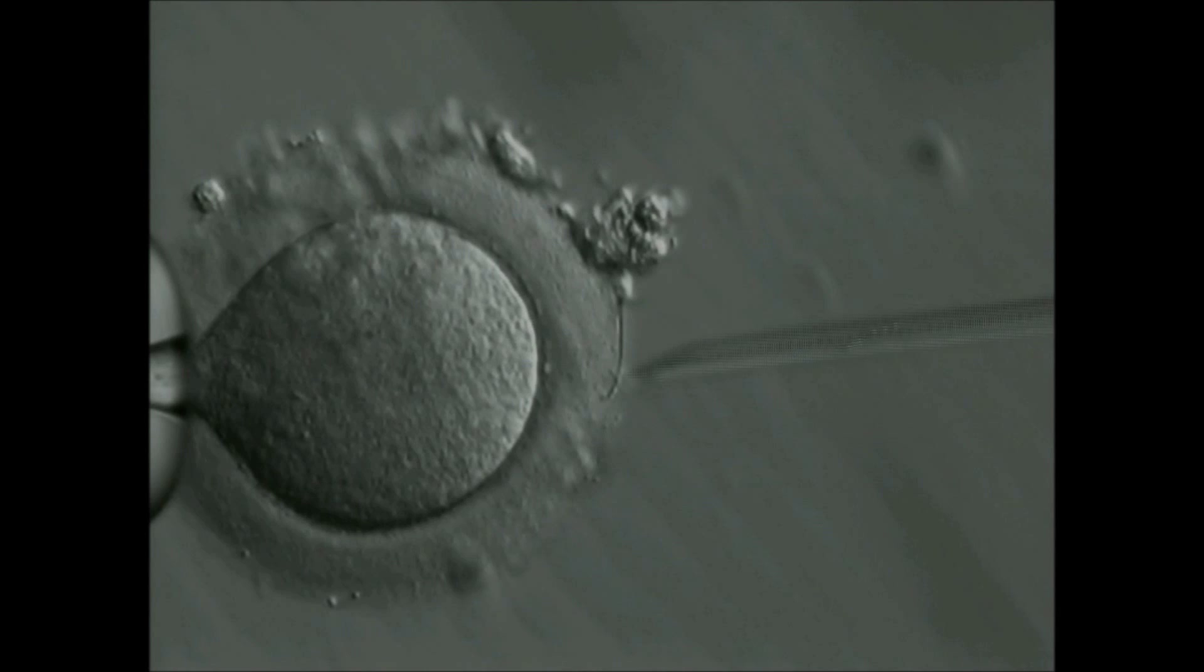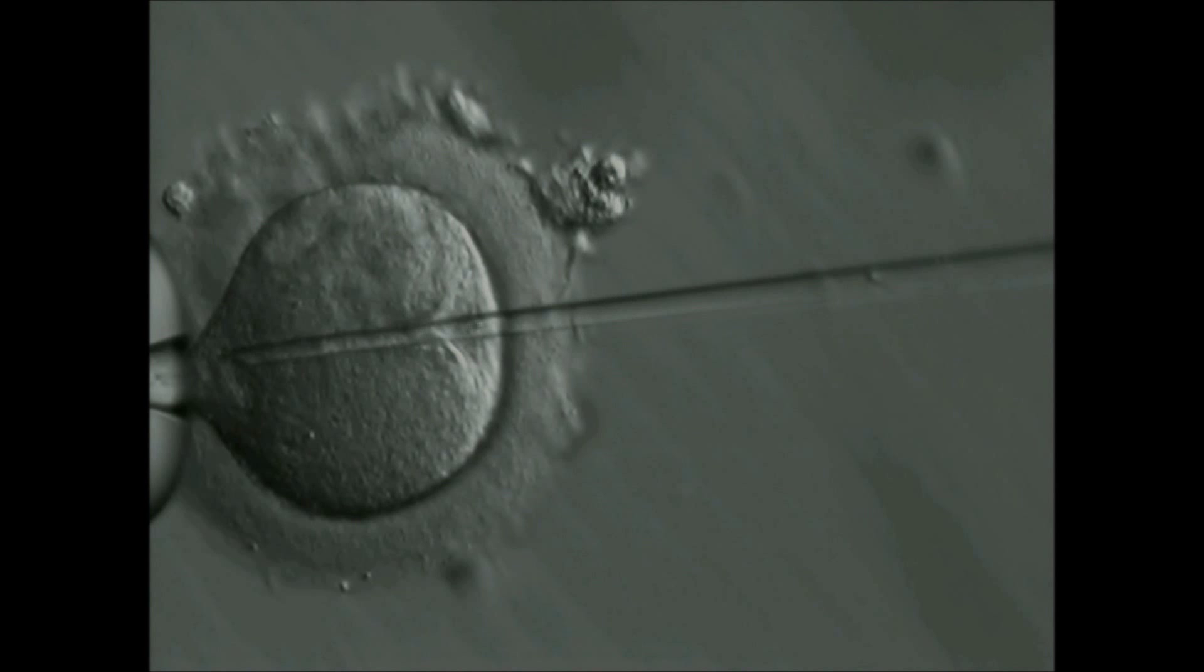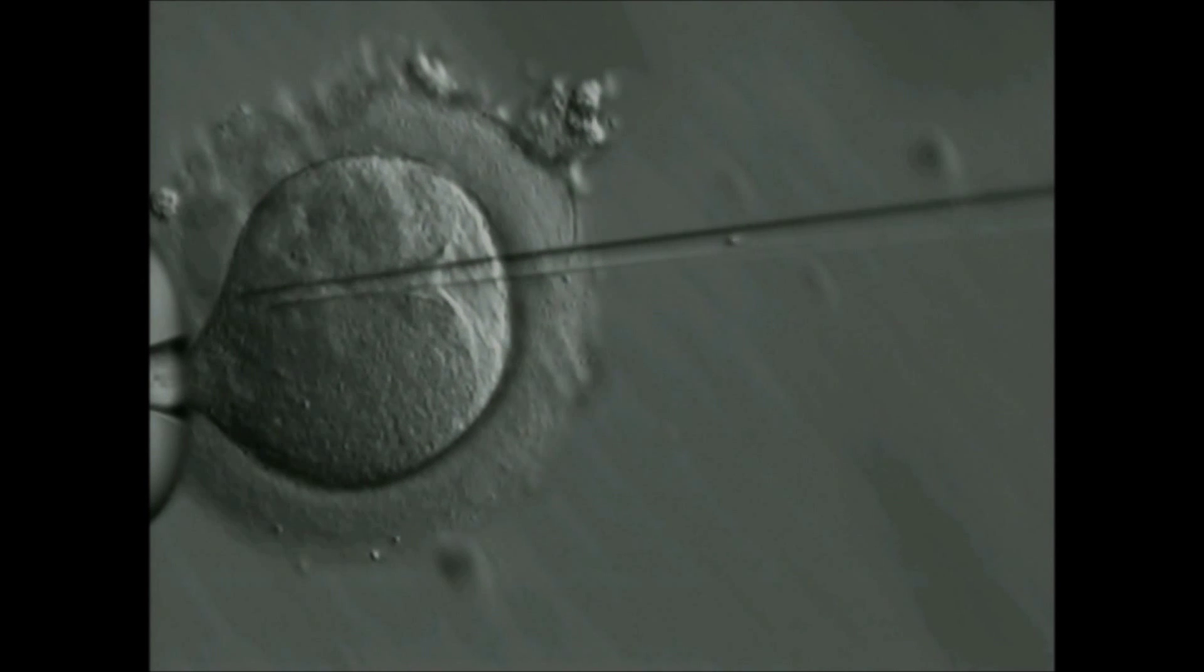After complex processing of the testicular tissue, the sperm are individually selected using this technique and live sperm are separated from the dead sperm by the HOS test technique and then used in ICSI with the partner's eggs to generate embryos.